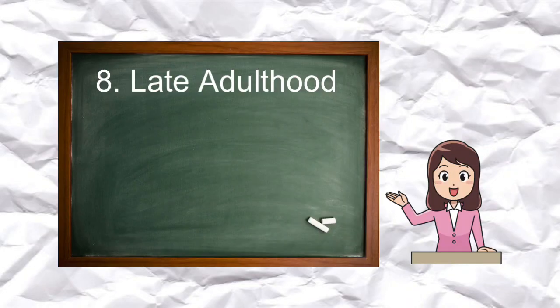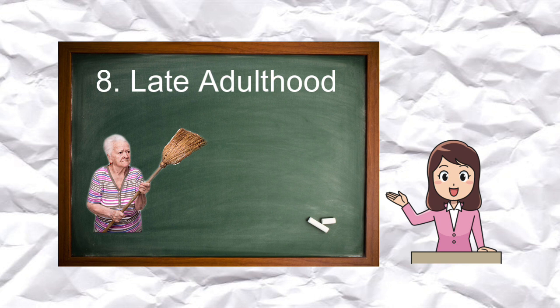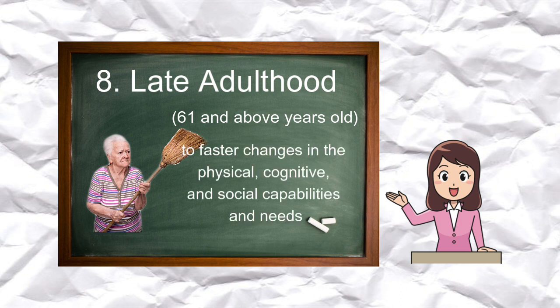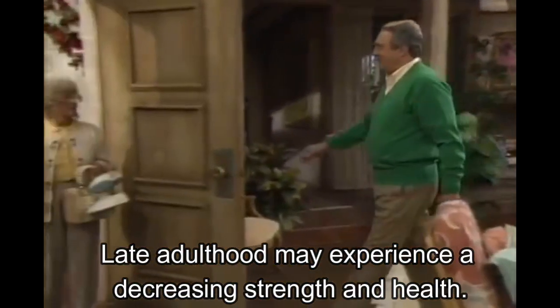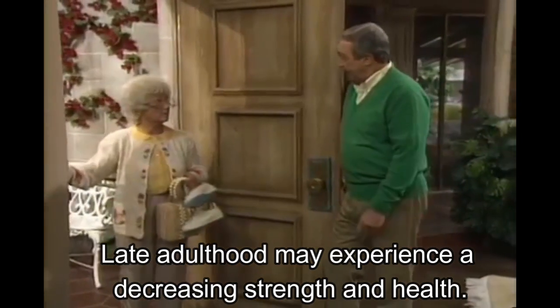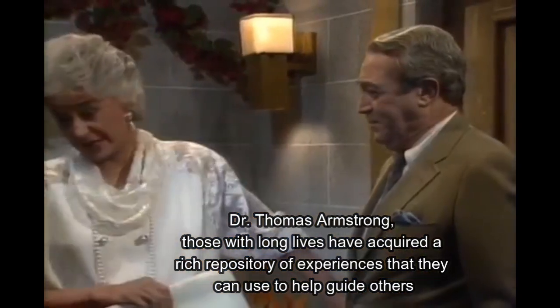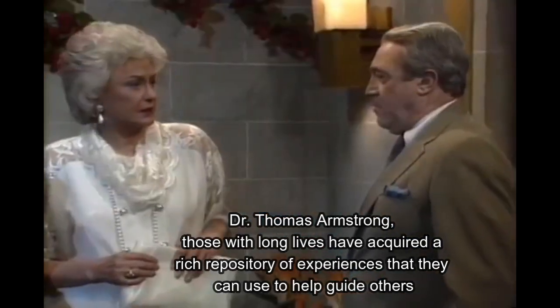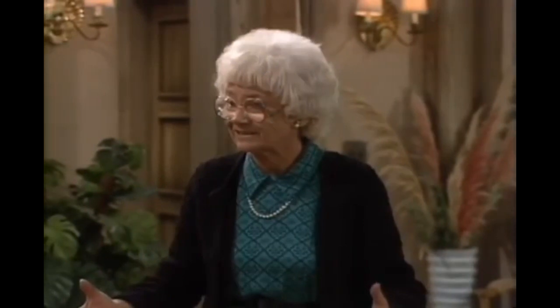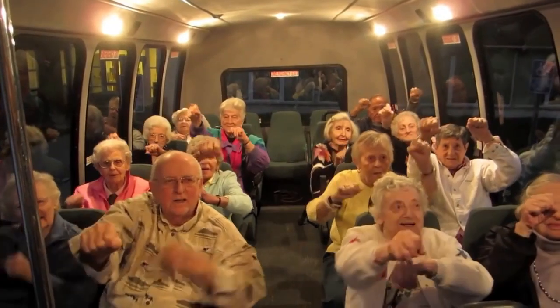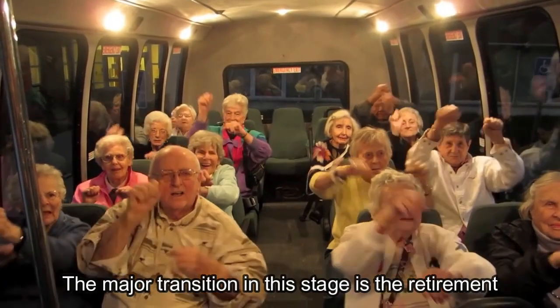Now we come to the last stage of human development: late adulthood. The stage of life from 61 years old and above is what we call late adulthood. In this stage, the aging process generally results in faster changes in physical, cognitive, and social capabilities and needs. This is the time when a person may experience decreasing strength and health. According to Dr. Thomas Armstrong, those with long lives have acquired a rich repository of experiences that they can use to help guide others. Elders thus represent a source of wisdom that exists in each of us, helping us avoid the mistakes of the past while reaping the benefits of life's lessons.